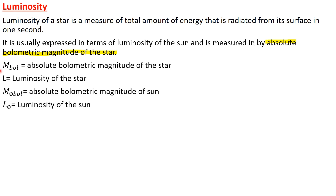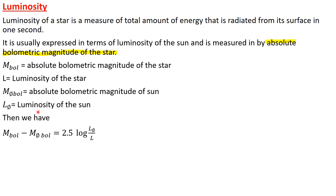Let M_bol be the absolute bolometric magnitude of the star, L be the luminosity of the star, M_bol,☉ be the absolute bolometric magnitude of the Sun, and L_☉ be the luminosity of the Sun. Then we have the equation: M_bol − M_bol,☉ = 2.5 log(L_☉ / L).